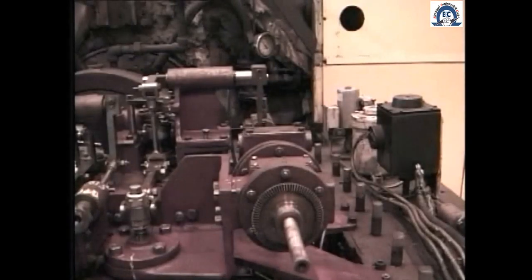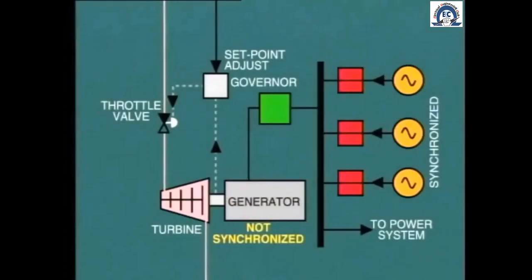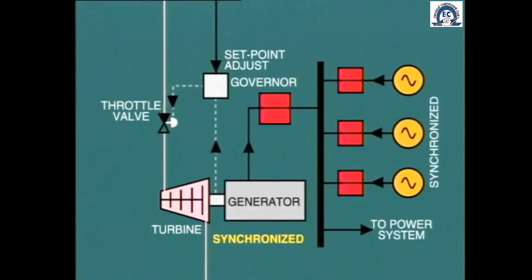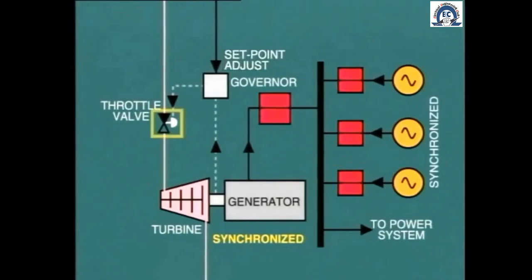Or, as is more usual, from a remote position by operation of a small motor drive known as the speeder gear. This name derives from the fact that when the turbine generator is not synchronized to the power system, any adjustment of the governor's set point will indeed alter the speed of the turbine. However, when the turbine is on load and the generator is synchronized to other machines, any adjustment of the speeder gear produces an imperceptible change in generator speed. Instead, this action causes a change in steam flow through the turbine with the consequence of a change in generator output.